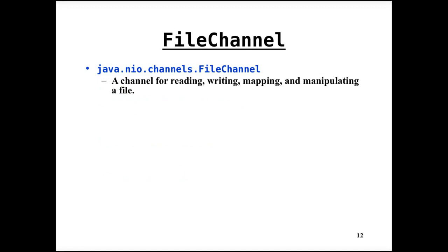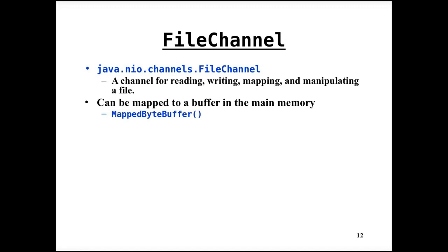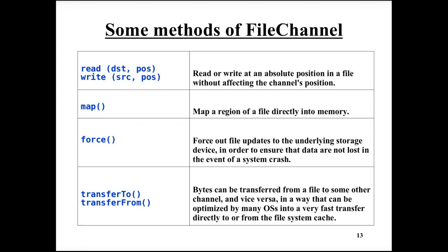A file channel can be used to transfer data to or from a file, and it can map content to a buffer in main memory. A mapped buffer means a segment of memory mirrors byte-by-byte the content of a file, making it faster to access. The memory mapped to the file is often the kernel's file cache. However, memory space may be wasted for smaller files because large chunks — normally page sizes — are allocated when mapping.